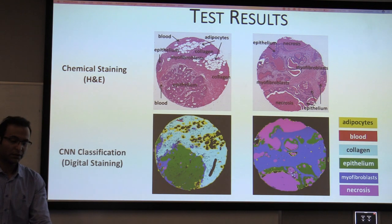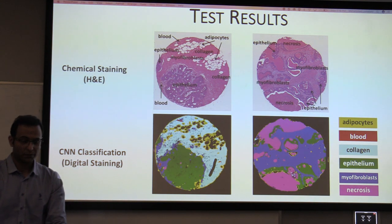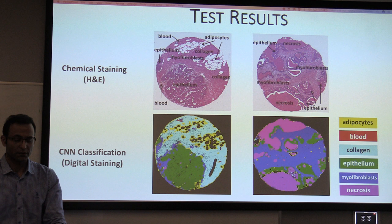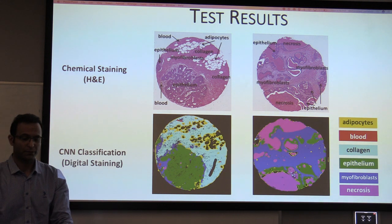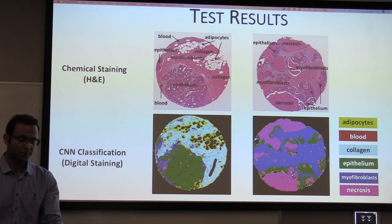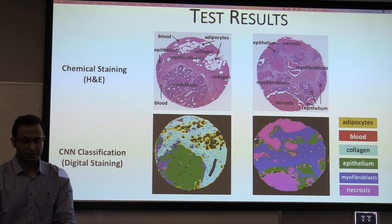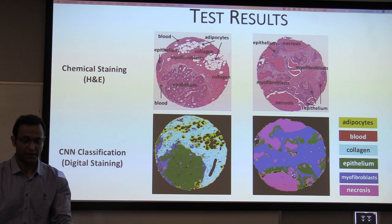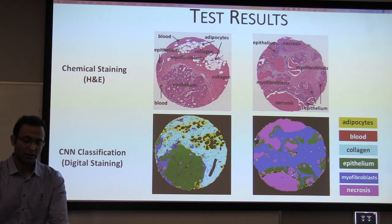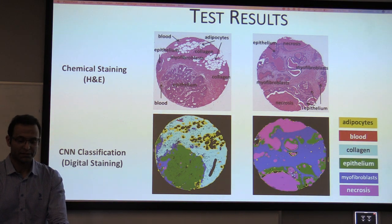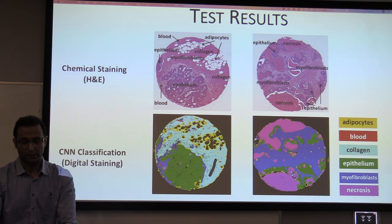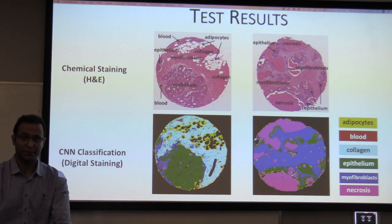In this slide, I compared the chemical staining result with the CNN classification result, which I called digital staining. The top two pictures are from chemical staining and the bottom images are from digital staining. As we can see in the left image, there is a big area in green which is epithelium, which is also identified by the chemical staining. And in the right image, we have a big area of necrosis that both chemical staining and CNN classification agree on.